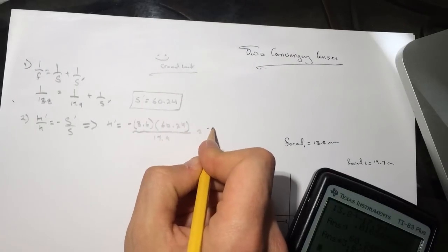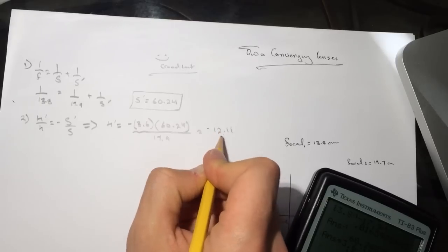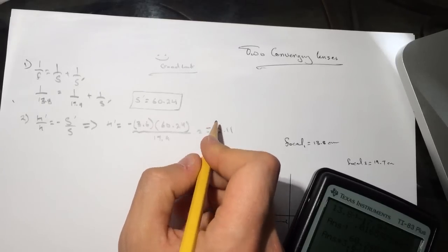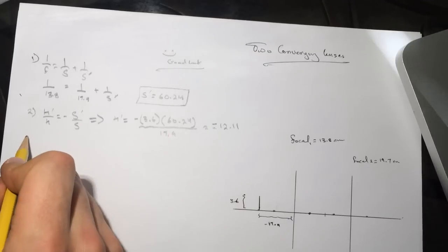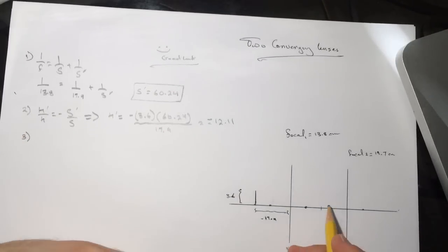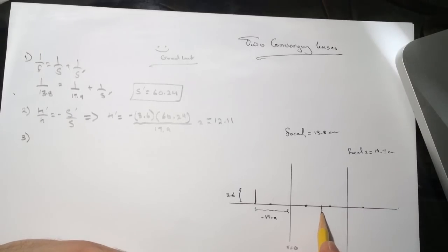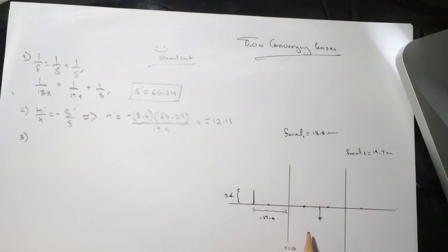Don't forget the negative here. So minus 12.11. The negative here means that it's going to be inverted.